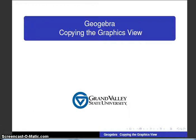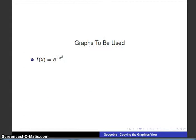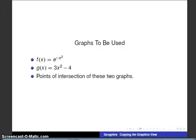So here's what we're going to be looking at in terms of the graphing view. These are the graphs we're going to use: f(x) equals e to the minus x squared, g(x) equals 3x squared minus 4, and then we're also going to illustrate how to find the points of intersections of two graphs.